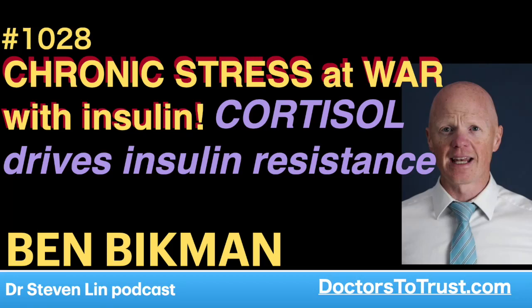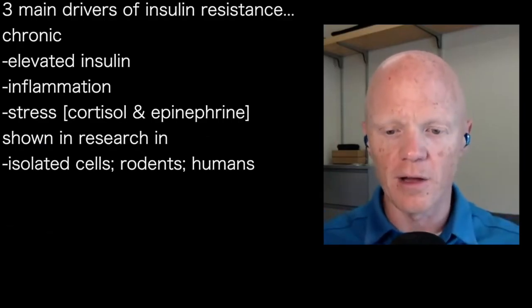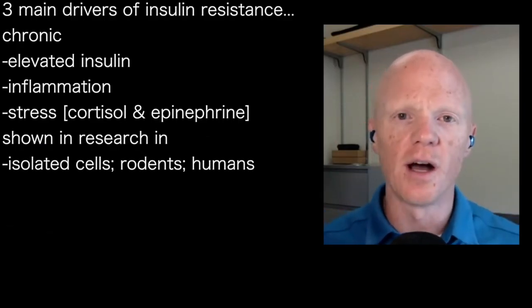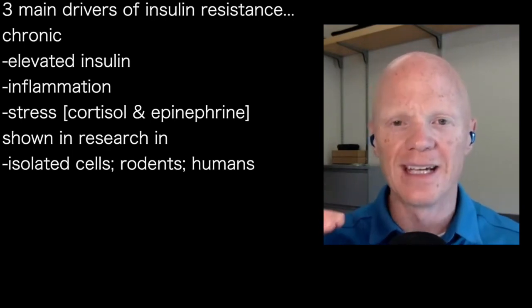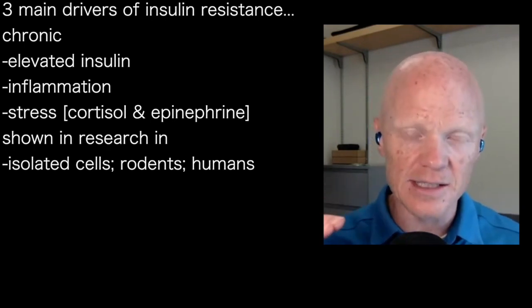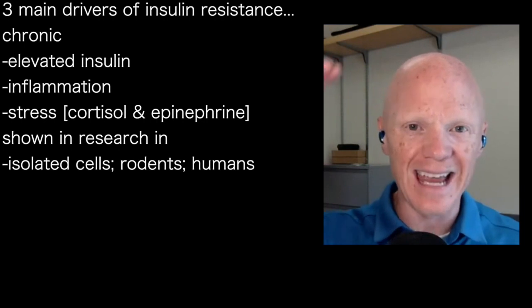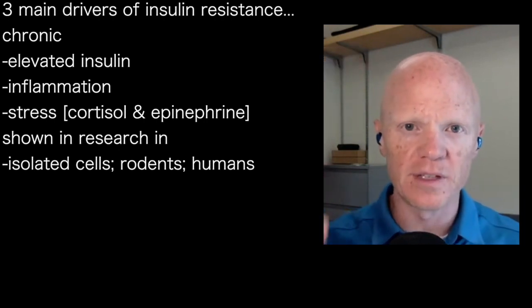There are three primary causes of insulin resistance: one is chronically elevated insulin itself making the body resistant to insulin, two is inflammation, and three is stress. These are defined as primary causes because in the biomedical realm, all of what's been published shows you can cause insulin resistance with those three stimuli — in isolated cells, in laboratory rodents, and in humans.